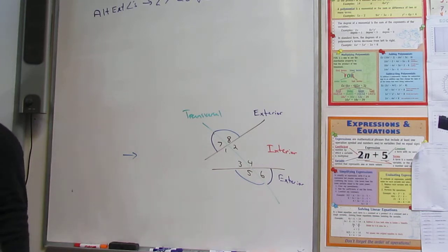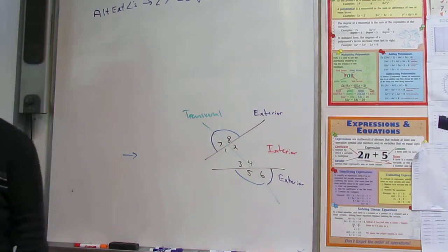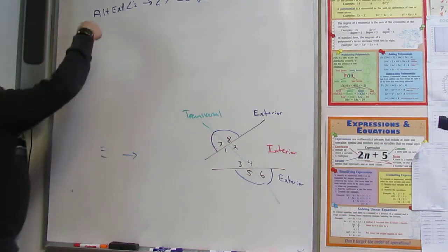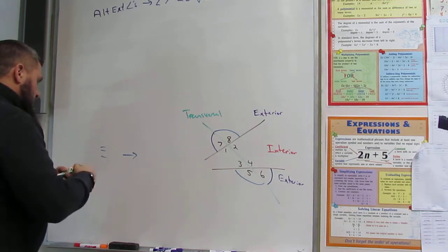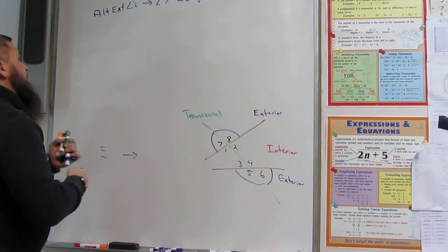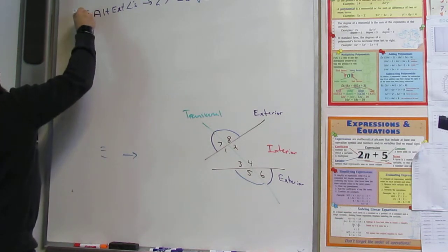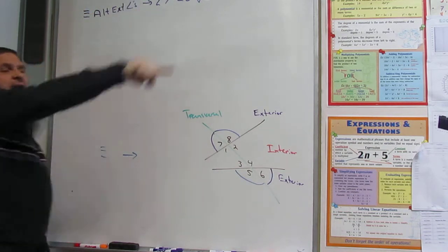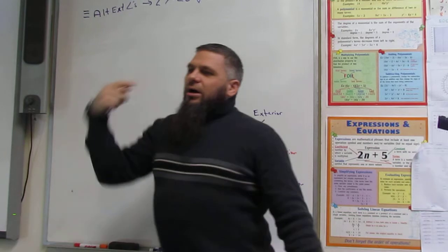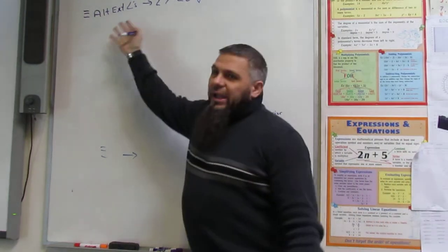From the last chapter — the word is 'if.' So I need that word. And once I use 'if... then,' now I have a conditional statement. Is that true? I hope so, because I'm telling you it is. Now, is the converse true? Does it go both ways? If I have angle 7 and 6, is that an alternate exterior angle?